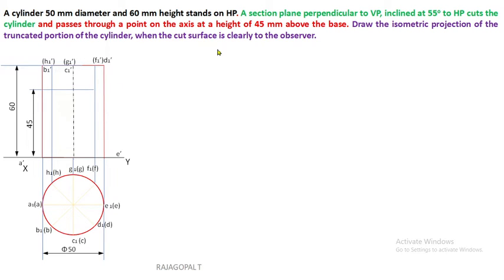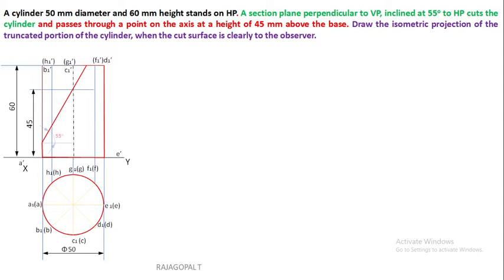Mark 45 mm above the base and the inclination is 55 degrees with respect to HP. After completing the section plane, the removed portion is identified. The remaining portion has to be converted into continuous thick lines. For cylinder and cone, only the boundary surface is visible — the intermediate divisions we drew are exclusively for our reference, so never convert them into continuous thick lines.